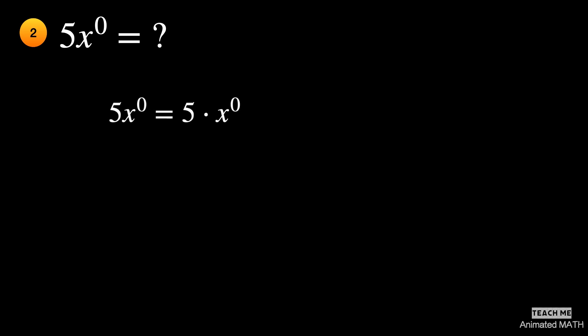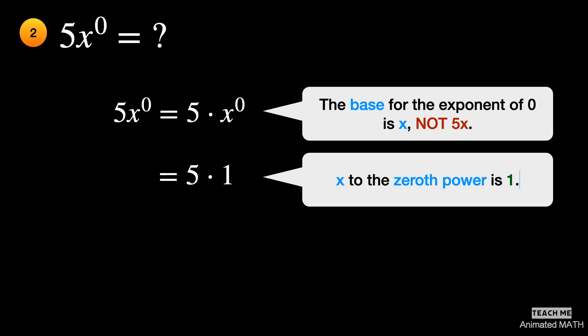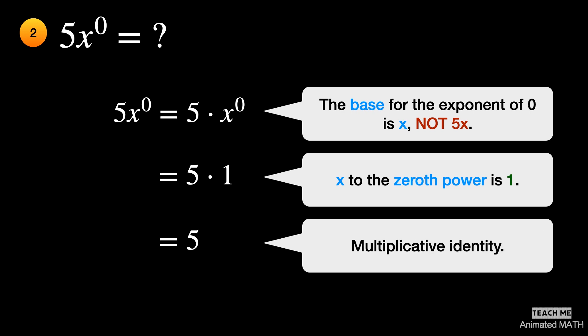The base for the exponent of zero is x, not 5x. The product of 5 and x to the zeroth power is 5 times 1, or 5.